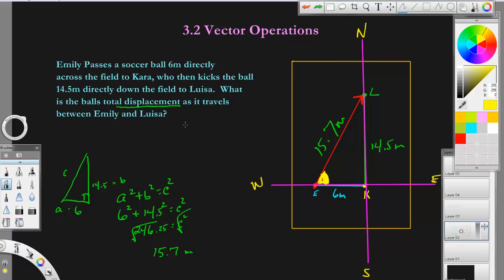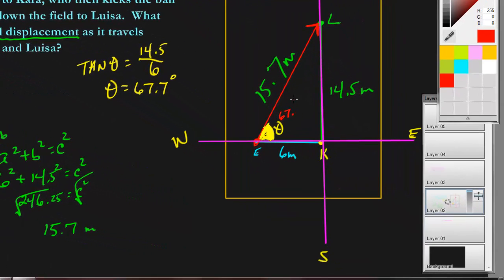So if I said the tangent of an angle, which we can call this angle theta, that's usually how it is. Angle theta would equal opposite over adjacent, which in this case is fourteen and a half over six. We would do second tangent, fourteen point five divided by six equals, and you would get about a sixty seven point seven degree angle. So angle theta is about sixty seven point seven degrees right here.